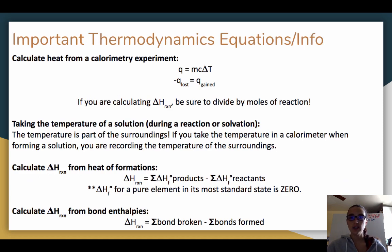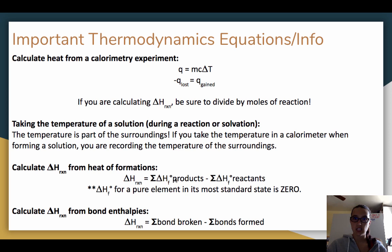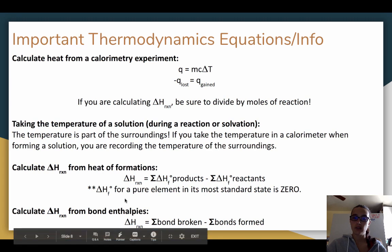Some important thermodynamics equations: to calculate heat from a calorimetry experiment, use Q = mc delta T. The first law of thermodynamics says heat lost by one substance is gained by another. If calculating delta H of reaction, divide by the moles. Remember, taking the temperature of a solution measures the surroundings. To calculate delta H from heats of formation — which is on your equation sheet — delta H of reaction equals the sum of heats of formation of products minus the sum of heats of formation of reactants, multiplied by coefficients. The heat of formation of a pure element in its most standard state is zero.